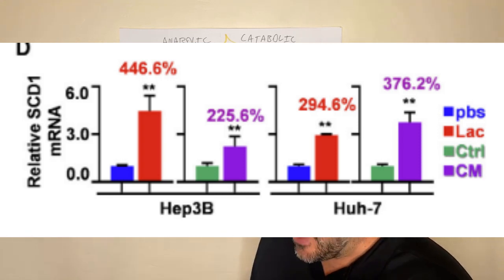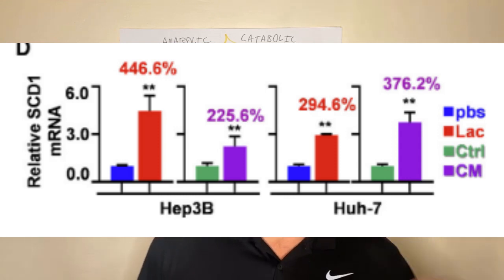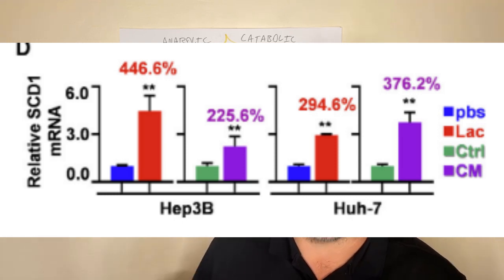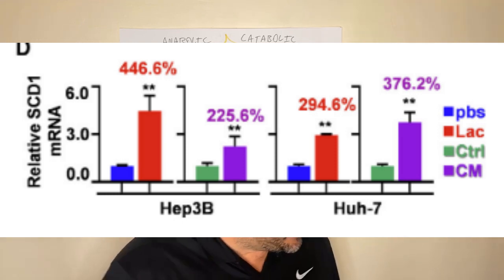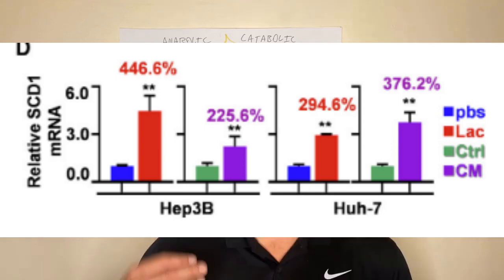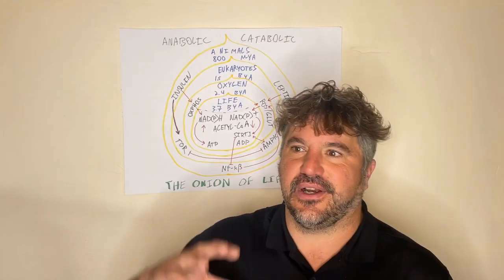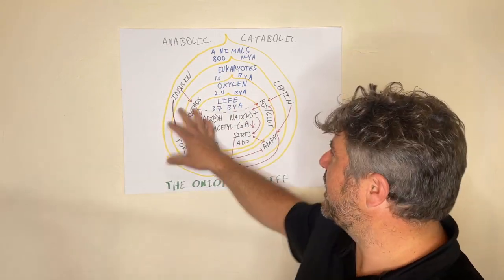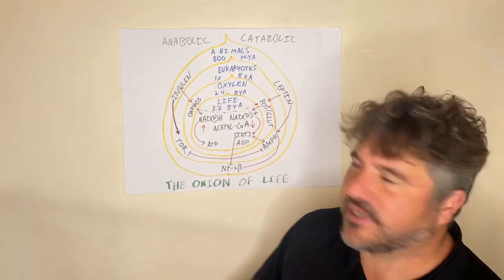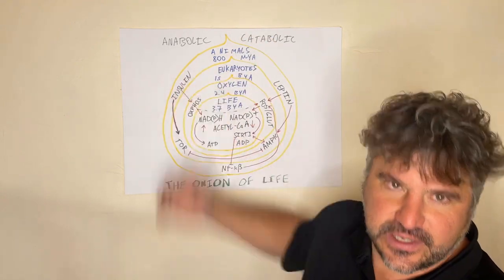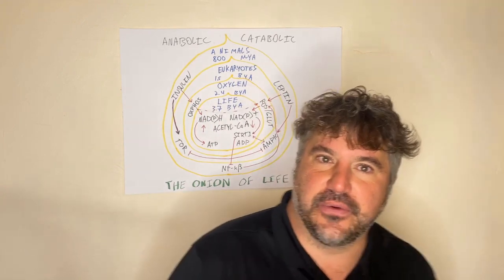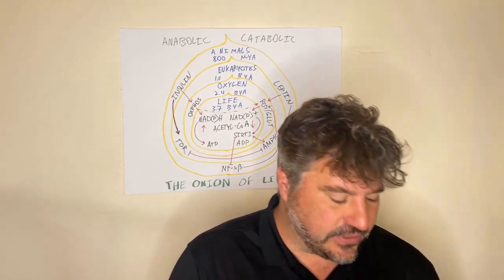Alpha-lipoic acid decreased SCD1 levels by something like two-thirds. So very clearly, SCD1 levels are directly caused by being in anabolic mode — having a lot of NADH and acetylated enzymes — and are prevented by being in catabolic mode and oxidizing the NADH pool. That has been shown in 2014 and 2021.